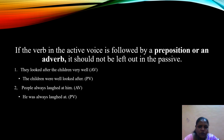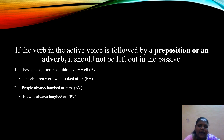If the verb in the active voice is followed by a preposition or an adverb, it should not be left out in the passive. For example, 'They looked after the children very well' becomes 'The children were well looked after.' The adverb 'well' must be added. 'People always laughed at him' becomes 'He was always laughed at' — the preposition 'at' must be kept. While writing sentences in passive voice, we should be very sure we have added all the information given in the active voice; we cannot omit any details.